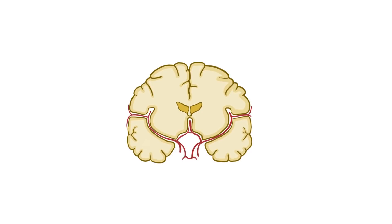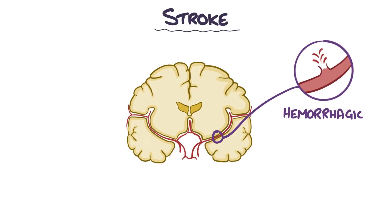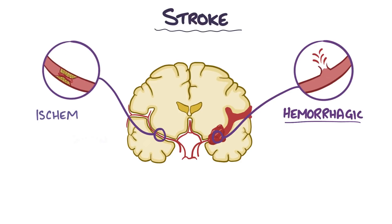There are two main types of stroke: a hemorrhagic stroke, which occurs when an artery ruptures and bleeds within the brain, and an ischemic stroke, which occurs when an artery gets blocked.